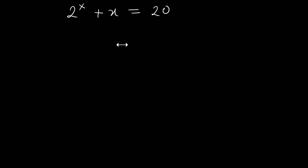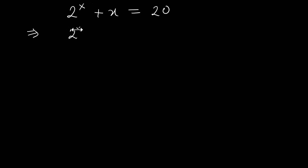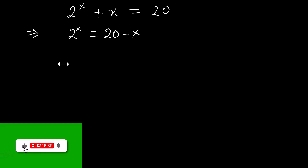In this video I'm going to provide a solution to this problem. We have to solve X + 2^X = 20. So let's start — let me keep X on my left-hand side and send the other terms to the other side, so we have 20 minus X.